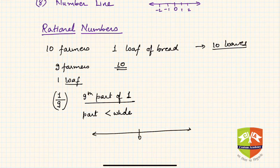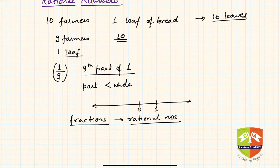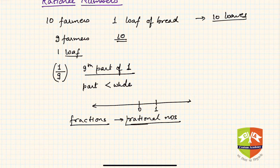So on the number line, between 0 and 1, there exist numbers that were not known earlier. These types of numbers, also called fractions, are now called rational numbers. The word 'rational' gets its justification partly from the word 'irrational,' because it was very difficult to define the significance of irrational numbers, and hence everything else came to be known as rational numbers.